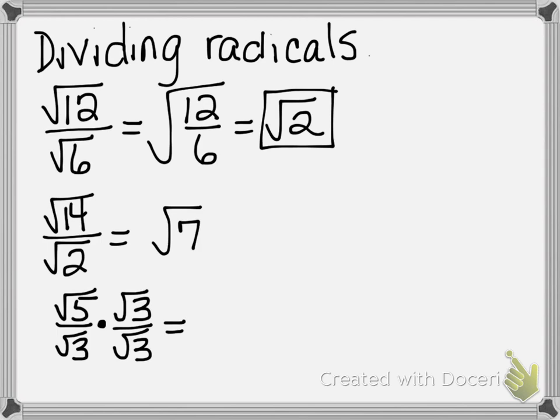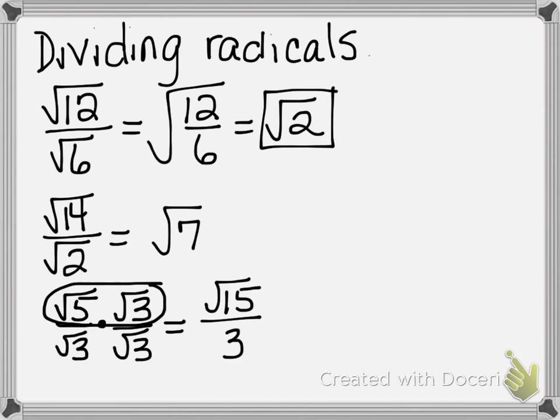Multiplying straight across the top gives you the square root of 15. Multiplying straight across the bottom: the square root of 3 times the square root of 3 is the square root of 9, which is 3. No more radical — and I can't divide those, so that's the answer.